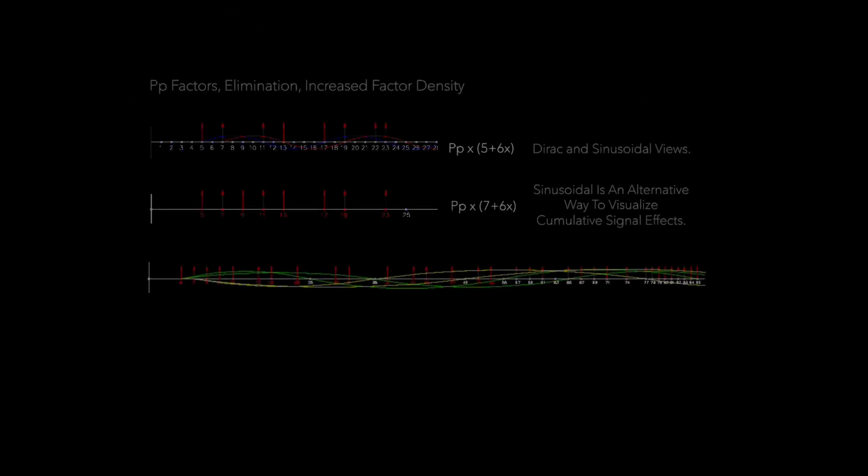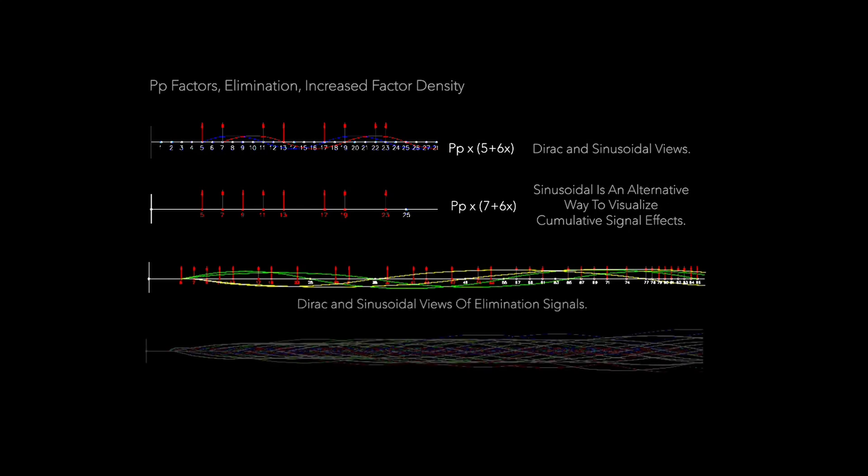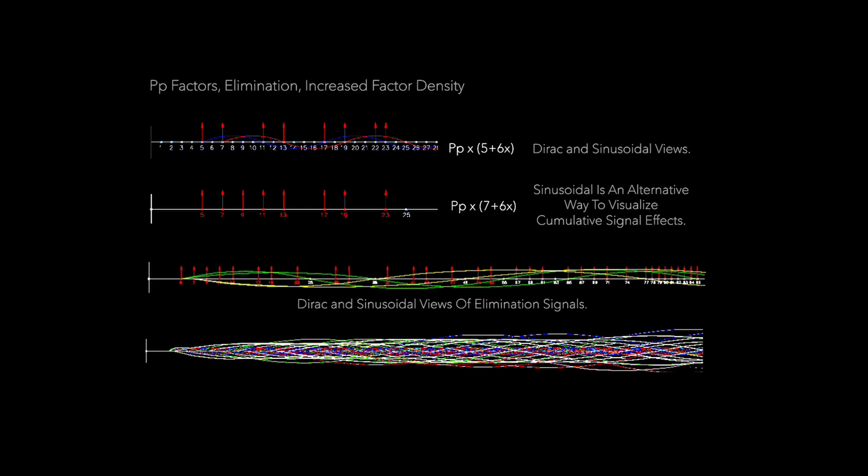Now graphically, if you want to overlay the sinusoidal values with Dirac impulses that represent integer values, you usually get graphs like this. Elimination signals are seen here in color. Notice how the elimination signal density grows increasingly with each additional potential prime to infinity. Thus, the prime number density decreases proportionally as a result.